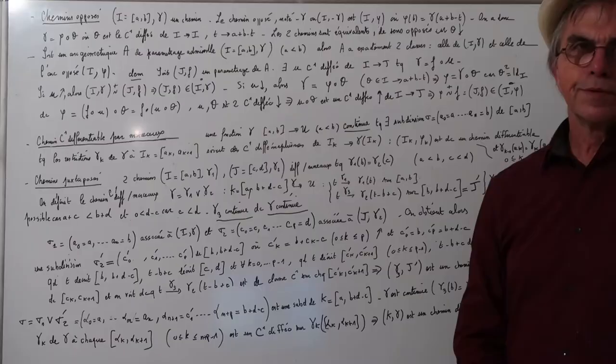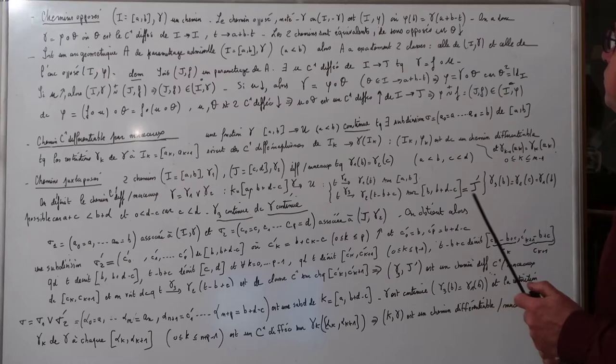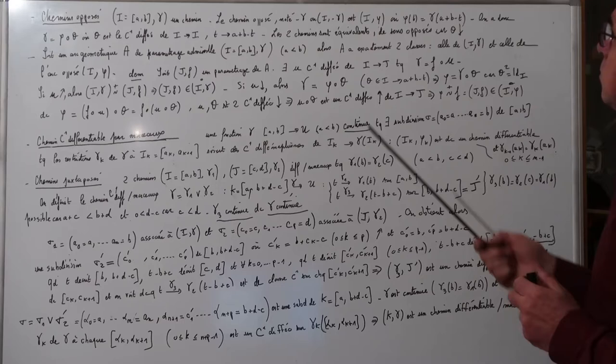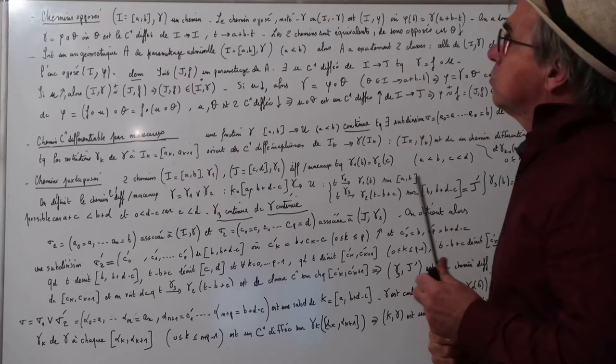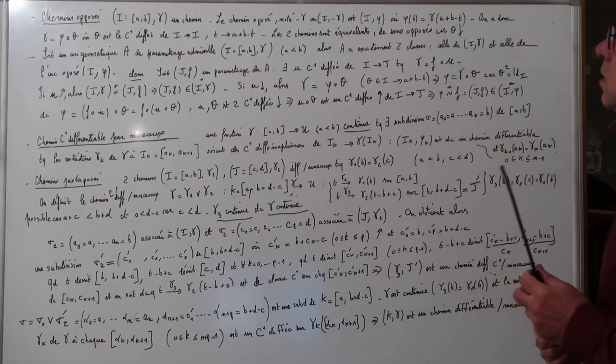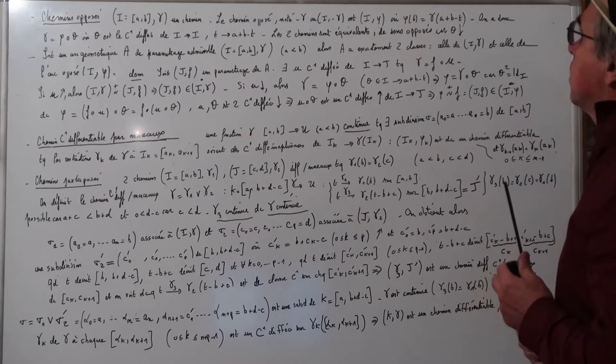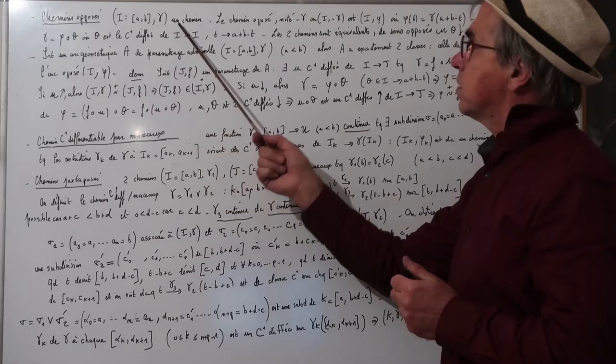Chemin opposé : on a un chemin Iγ, le chemin opposé noté -γ est le chemin Iφ où φ est défini par φ(t) = γ(A + B - t). On a γ = φ rond θ, où θ est le C1-difféomorphisme qui à t fait correspondre A + B - t. Les deux chemins sont donc équivalents, de sens opposé, parce que θ est décroissant. Soit un arc géométrique A de paramétrage admissible Iγ avec A < B ; alors A a exactement deux classes, celle de Iγ et celle de l'arc opposé Iφ.